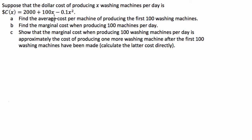The second thing is we've got to find the marginal cost when producing 100 washing machines per day. And the third thing is we've got to show that the marginal cost when producing 100 washing machines per day is approximately the cost of producing one more washing machine after the first 100 have been made. So basically for part C, we've got to show that the cost of making the 101st washing machine is equal to the marginal cost at 100 washing machines.